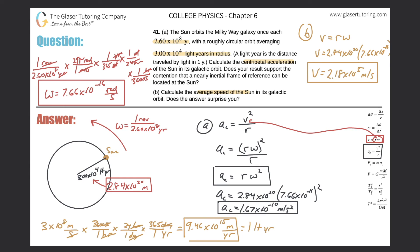And does the answer surprise you? I don't know. It's definitely fast. That's moving. That's 200,000 meters per second. But even though it's fast, remember the distance that it's traveling. The radius is 2.84 times 10 to the 20th meters. I mean, that's insane. So I don't know. I'm not really surprised by much anymore.